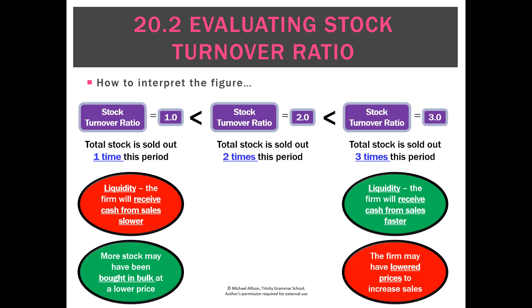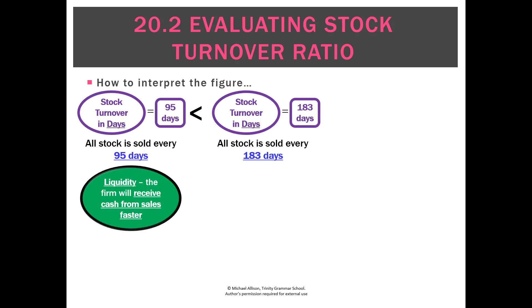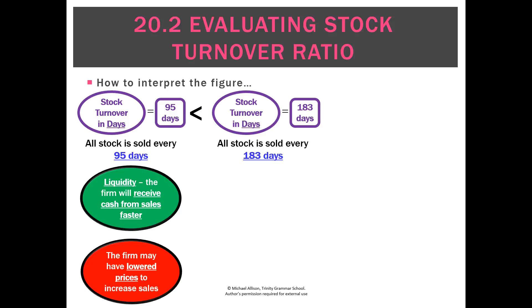Conversely it might mean that we had to lower prices to increase sales. We can sell anything faster if we lower the price enough. We don't know whether we made a profit, so one limitation of this ratio is we know how quickly we sold things but we don't know how much profit we made. Looking at the days figure, if the average stock turnover in days went from 183 to 95, that would be a good trend — we're selling our stock in only 95 days and we're going to get cash from sales faster.